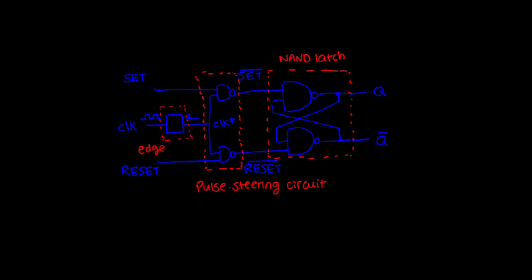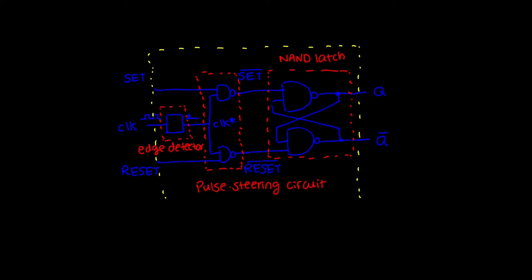This is called a pulse steering circuit, and this is an edge detector — which can be either a positive or negative edge detector. The difference is basically swapping out an AND gate for a NOR gate. Drawing another block around the whole thing shows the inputs and outputs clearly. This is a flip-flop — specifically it's called an SR flip-flop, for set-reset flip-flop, and it has some very peculiar characteristics.